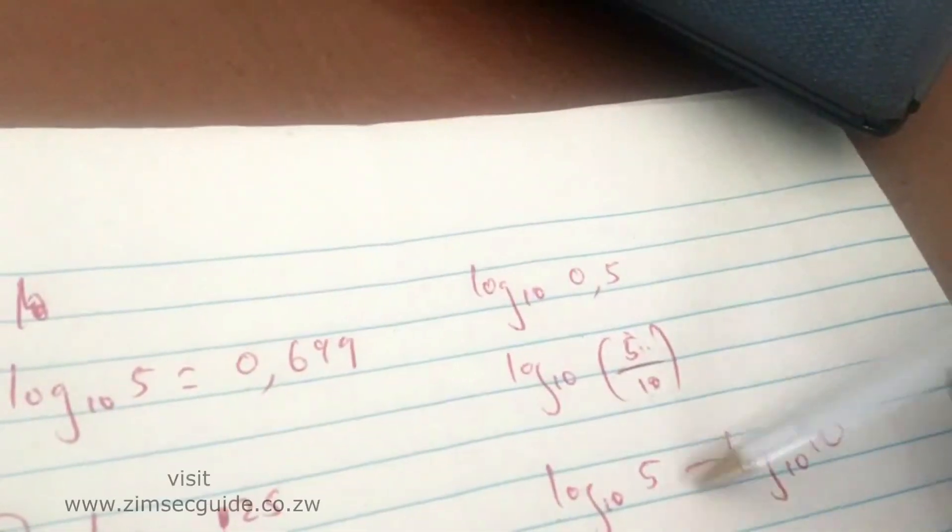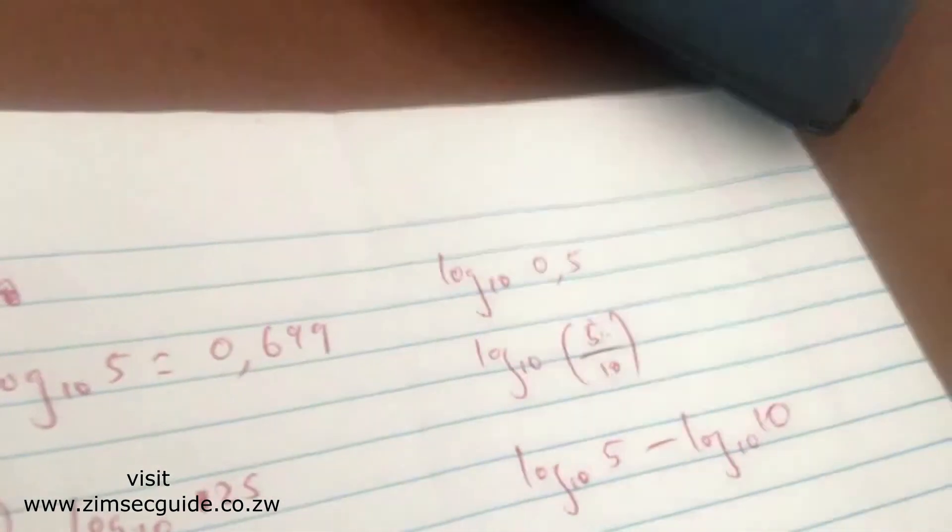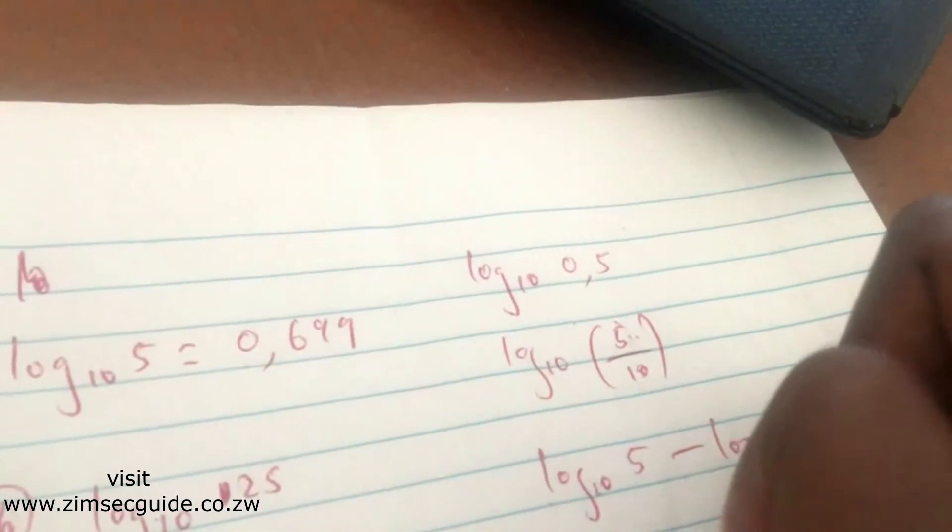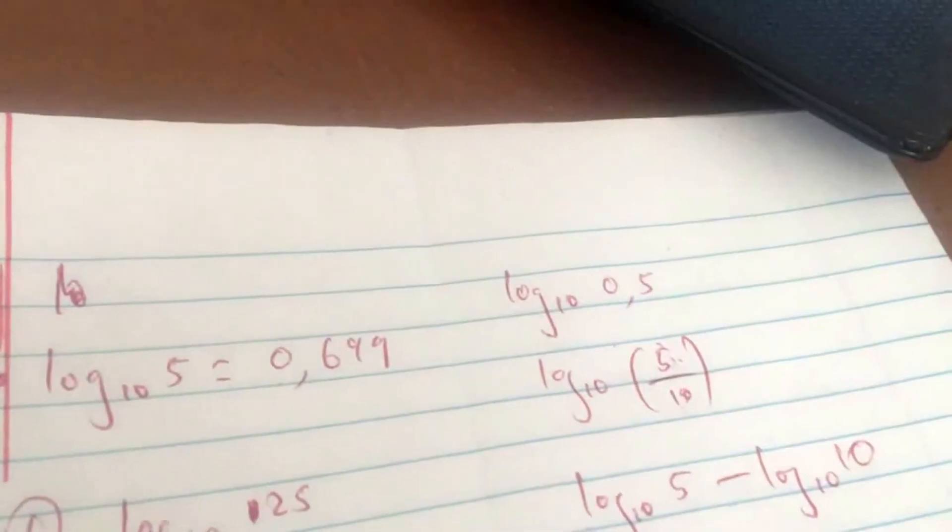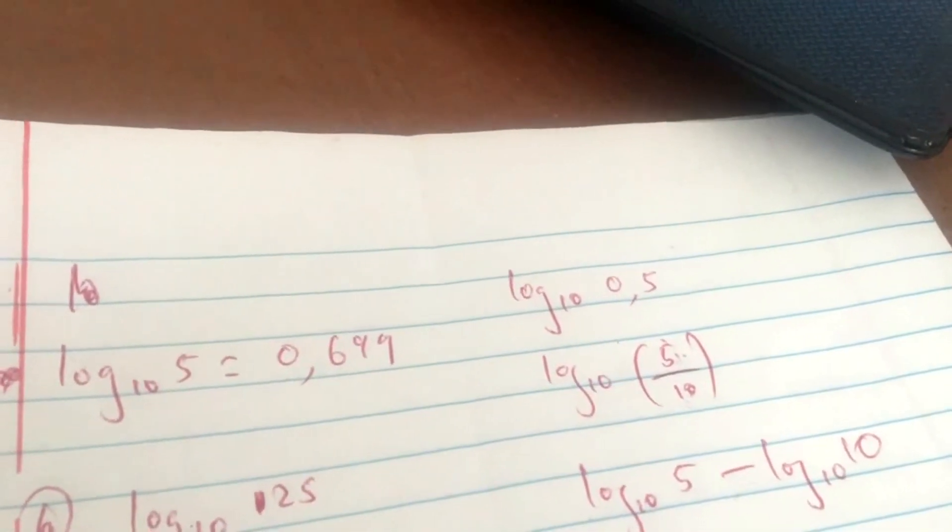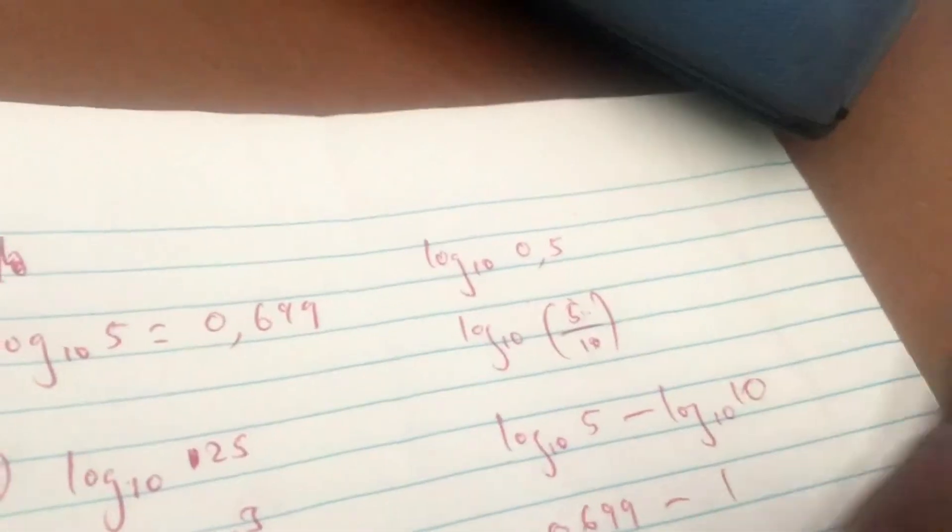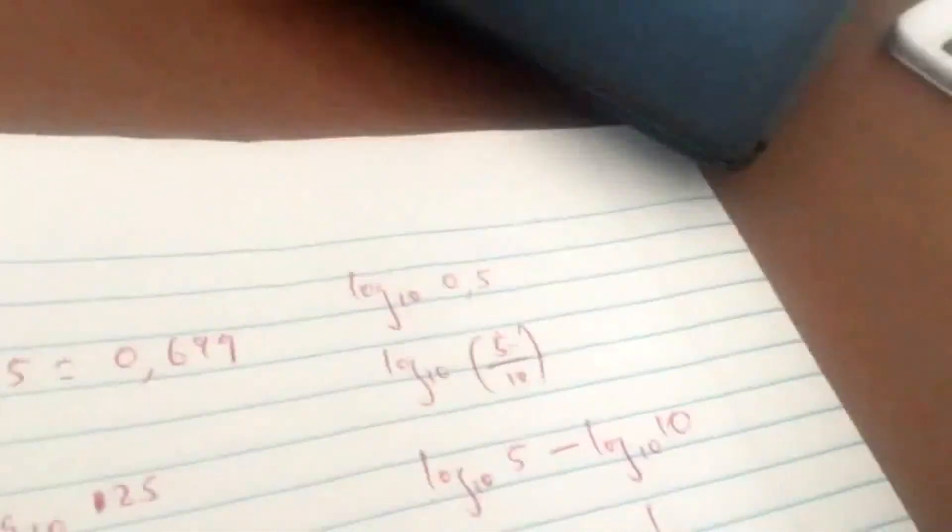So this is 0.699 minus 1, which gives you a negative value. So 0.699 minus 1, you're going to get negative 0.301. This is your final answer there.